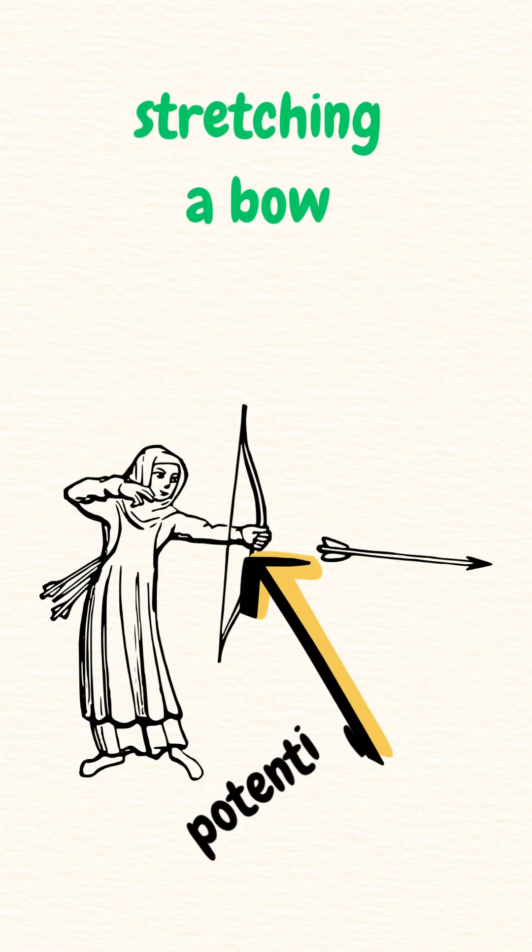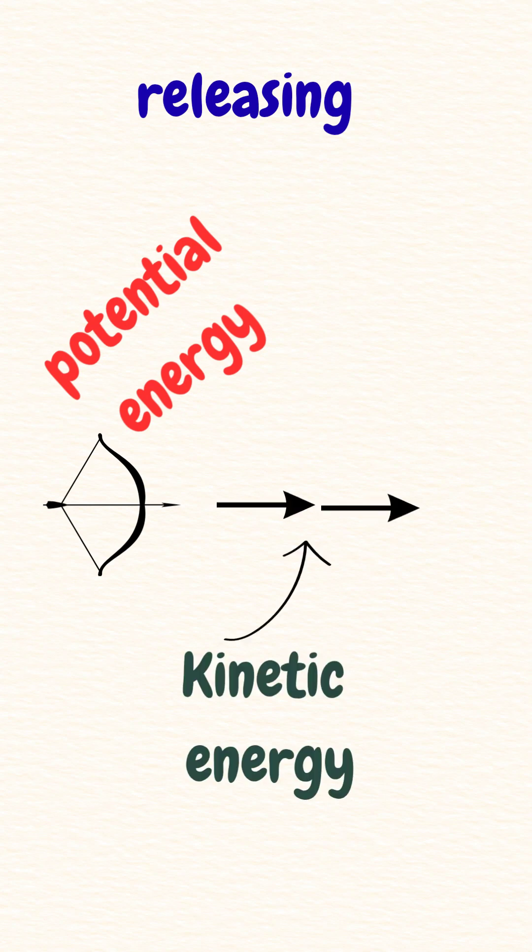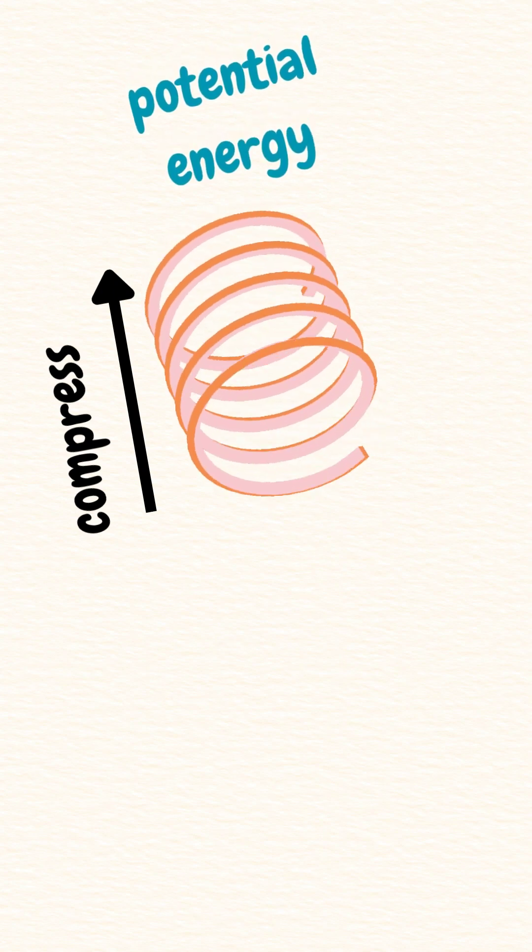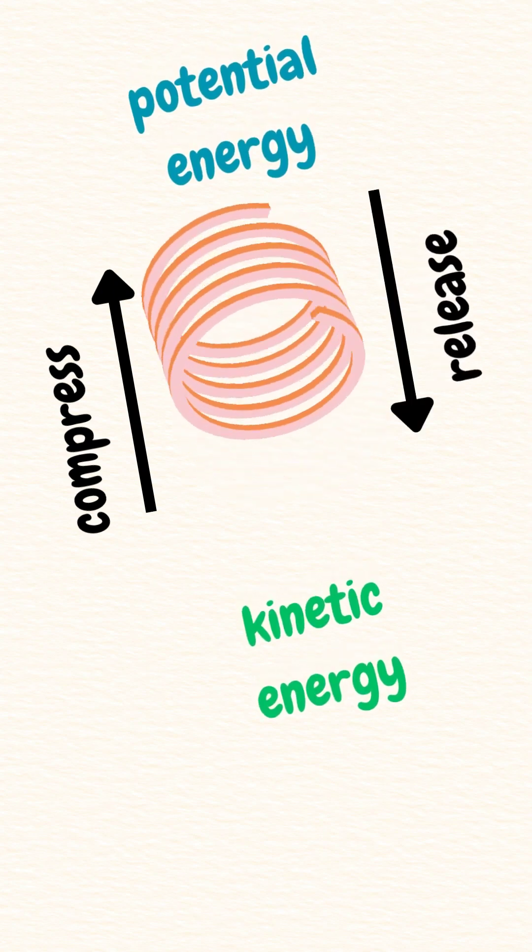Stretching a bow stores potential energy, and releasing it converts that energy into the arrow's kinetic energy. Similarly, when we compress a spring, it stores potential energy, and when we release it, that energy converts into kinetic energy.